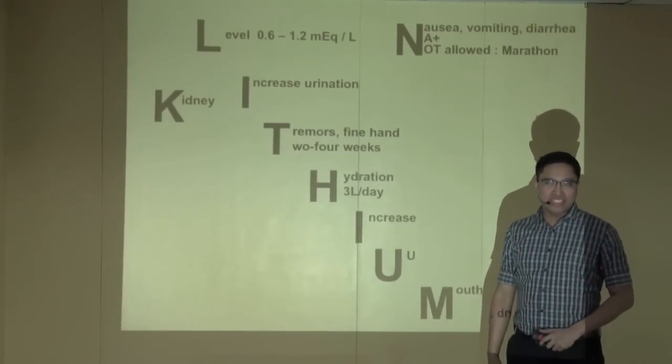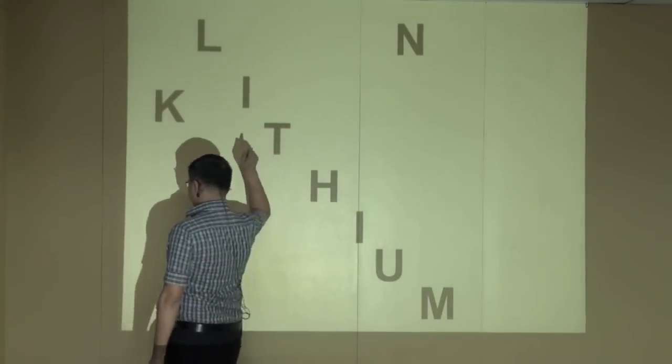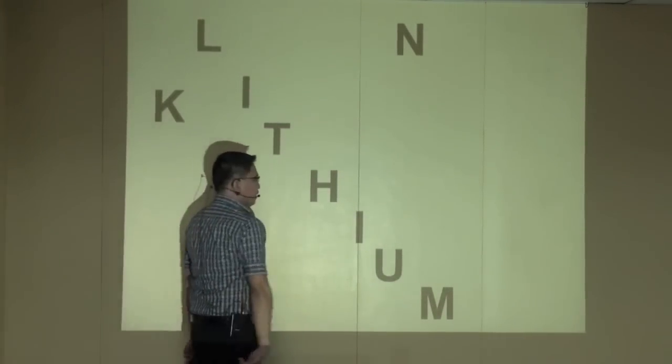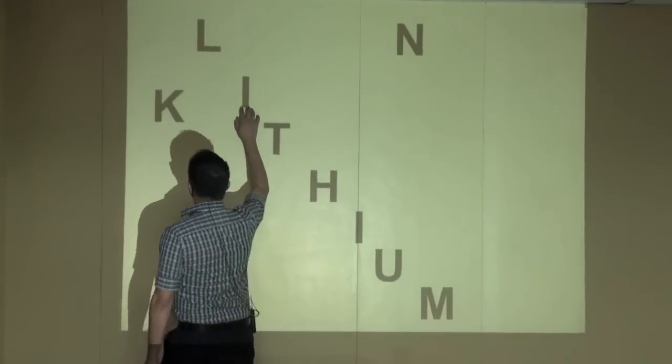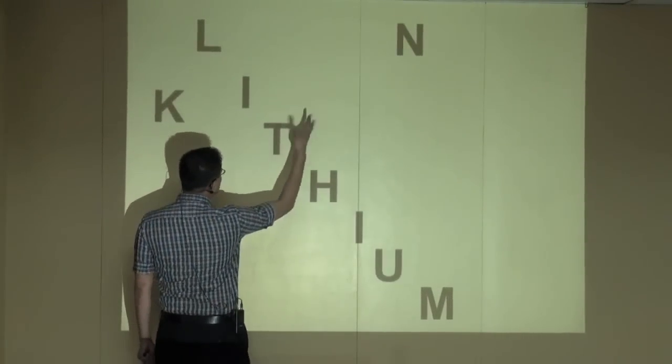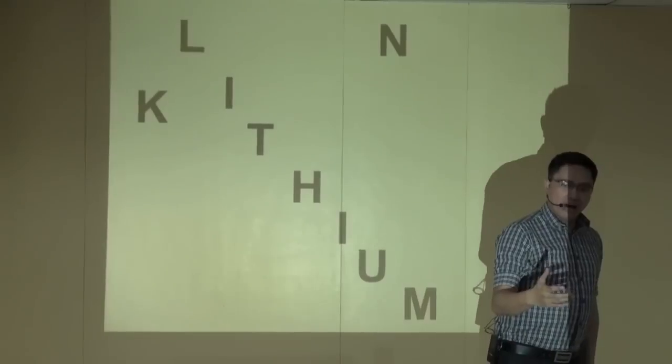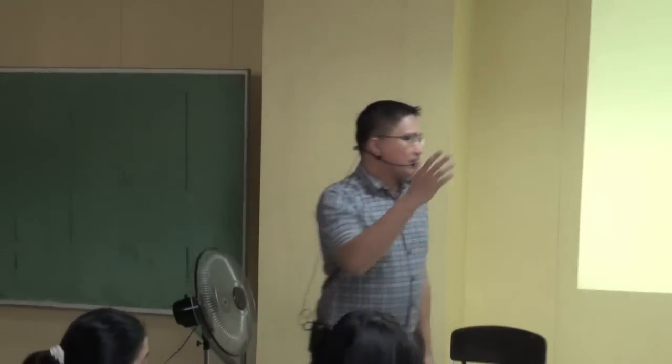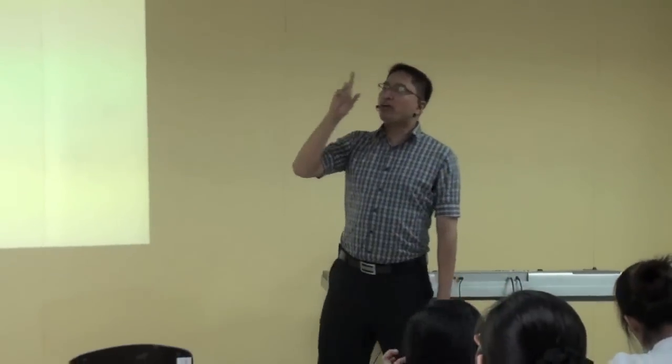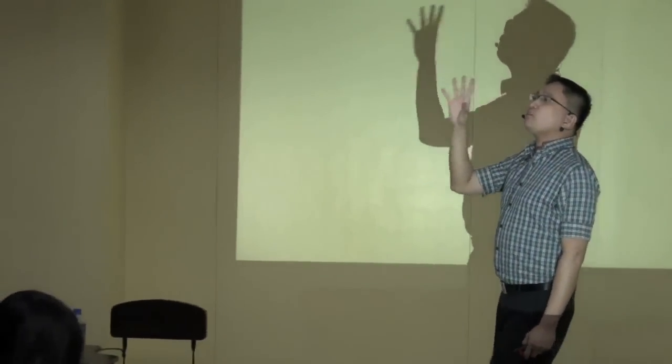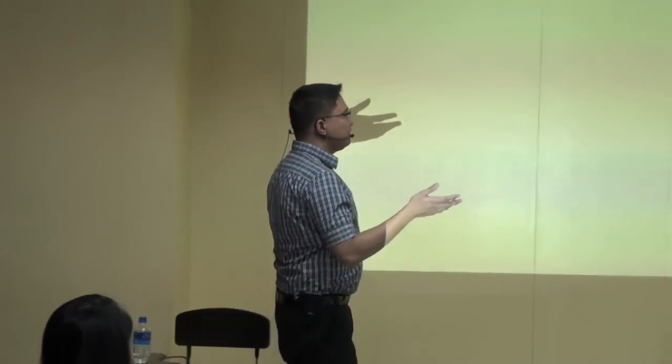Now I'm going to move. Tell me what is the word in this area? What's the letter T? Tremors. What's the K? Kidney. What's the M? Mouth dry. What's the letter I? Increase urination. What's the letter T? Two to four weeks. How many weeks before it works? Forced water, dry mouth. You're going to tell me what is the K that you need to check? Kidney. What's the normal level of lithium? Point six. Polyuria. Can you take lithium polyuria or oliguria? Polyuria. Tremors. How many weeks before it works? How many liters of water per day? Constipation or diarrhea? Diarrhea. Very good.